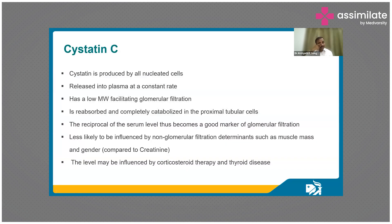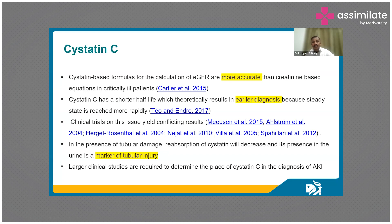What is cystatin C? Cystatin C is produced in all nucleated cells, released into plasma at a constant rate, and has a low molecular weight that facilitates complete glomerular filtration. At the same time, it is completely reabsorbed in the proximal tubular cell and catabolized. If we use cystatin C as a marker of kidney function, it would be independent of the glomerular filtration rate. It is only influenced by corticosteroid therapy and thyroid disease, and it is more accurate than creatinine-based methods.